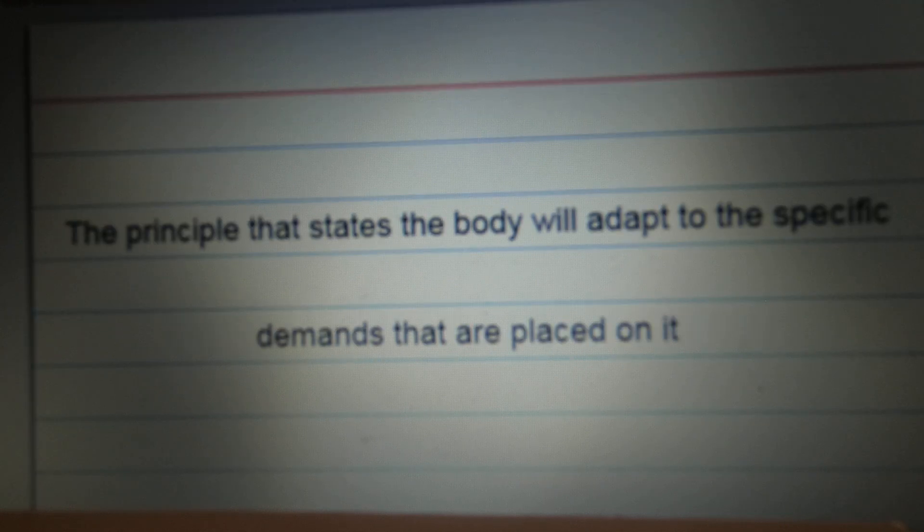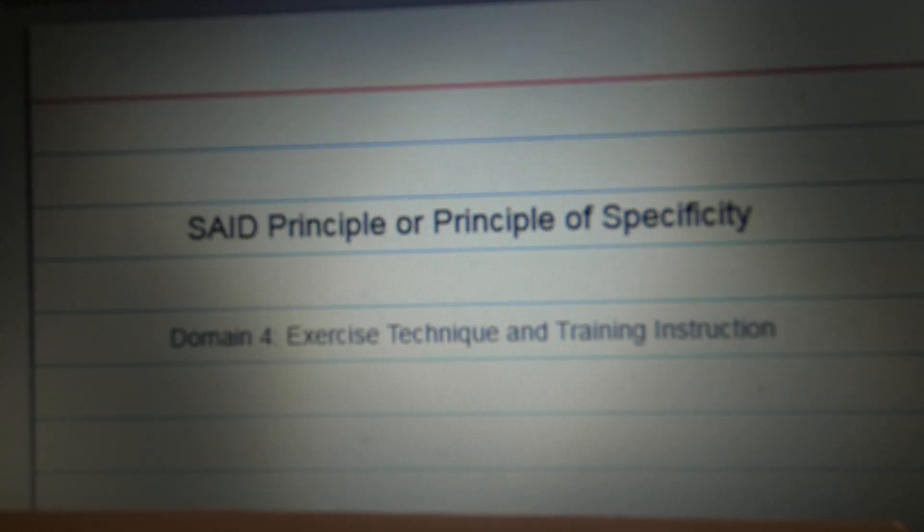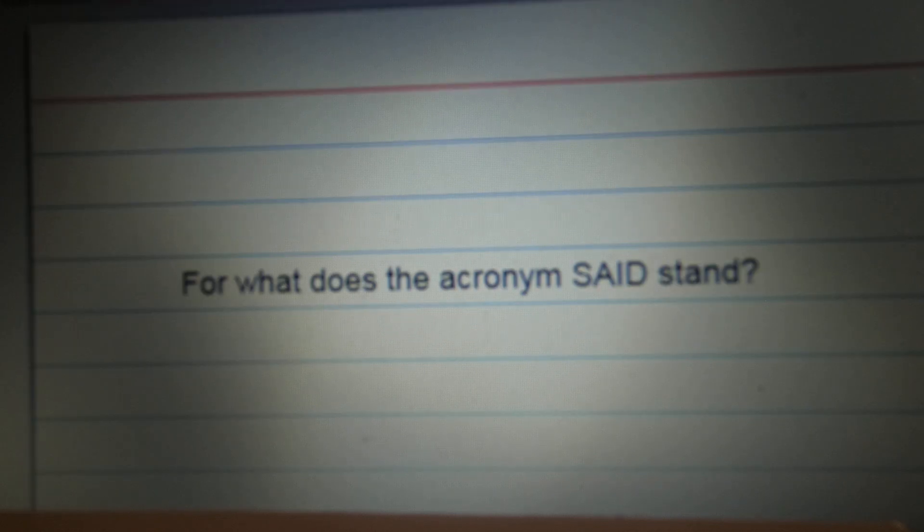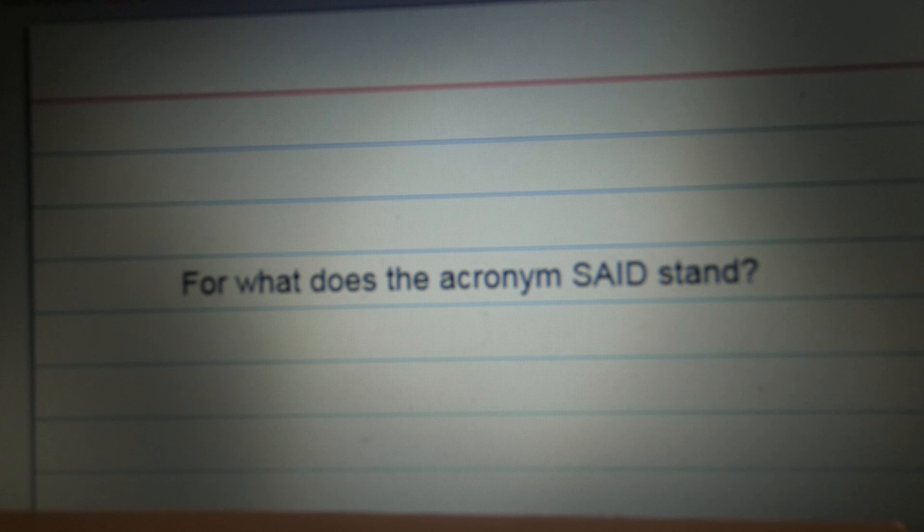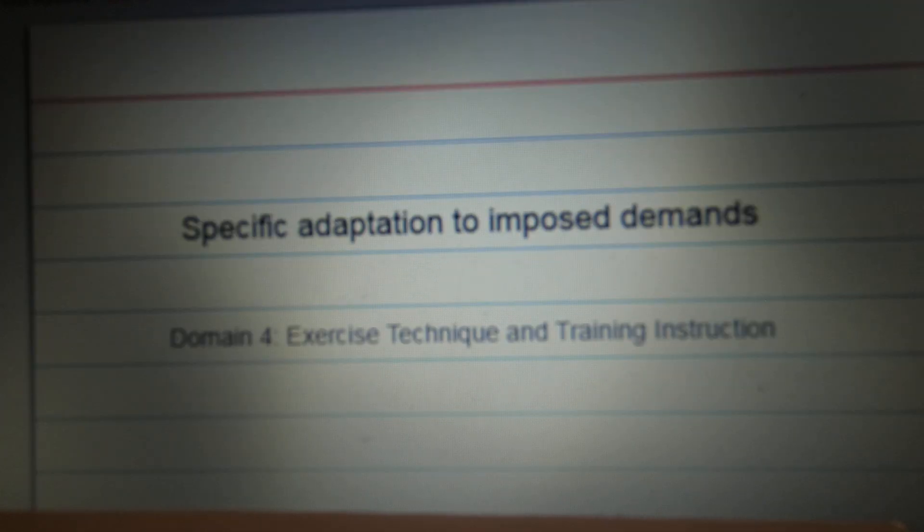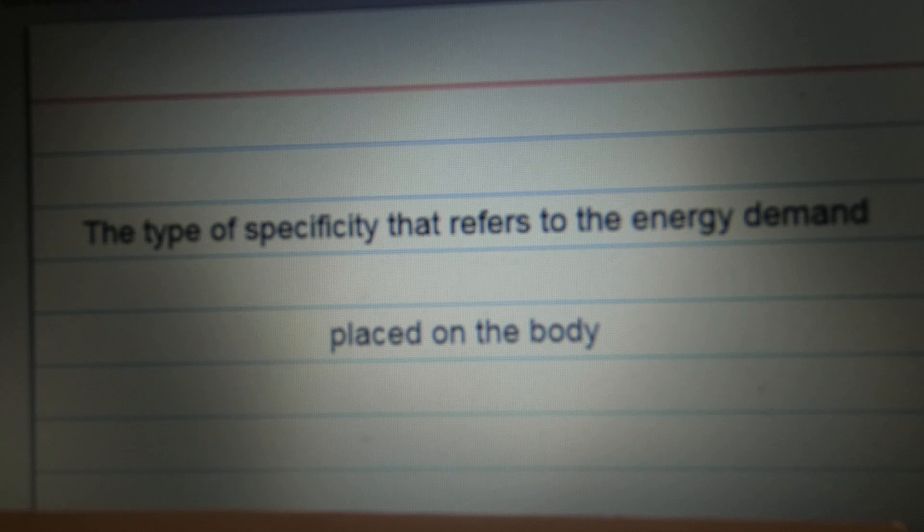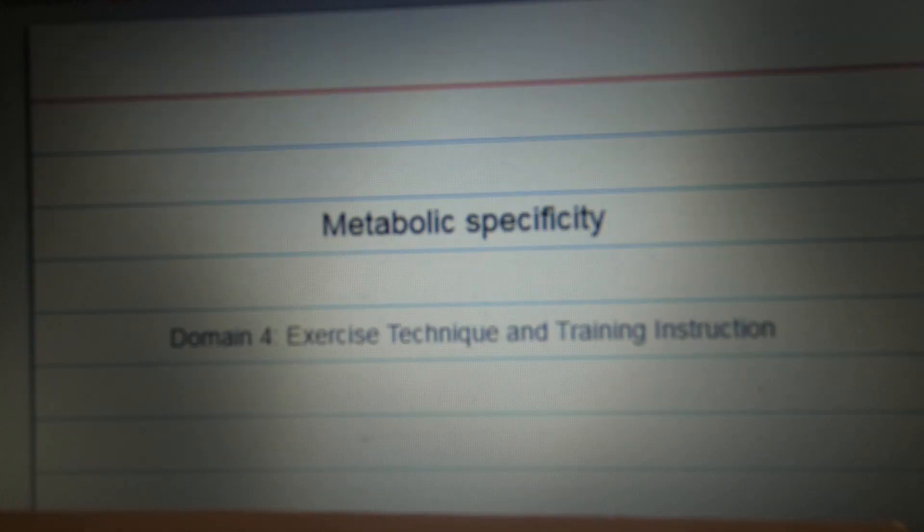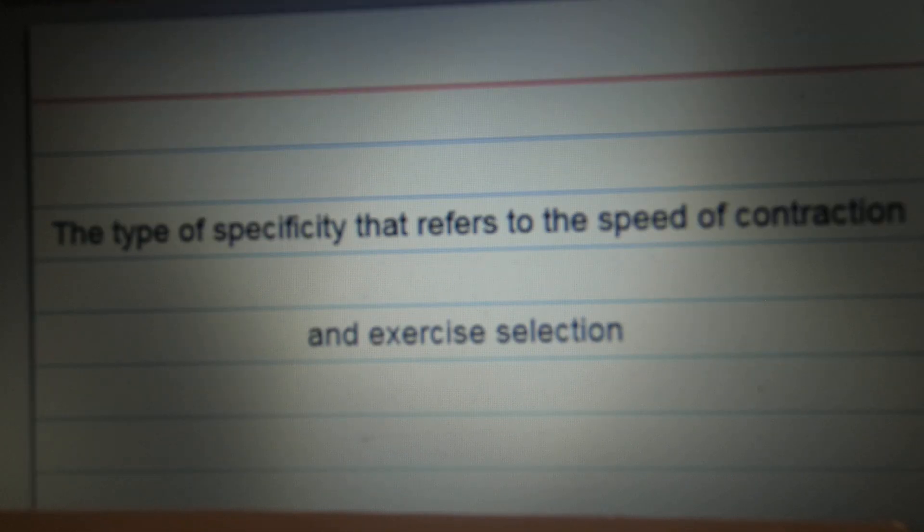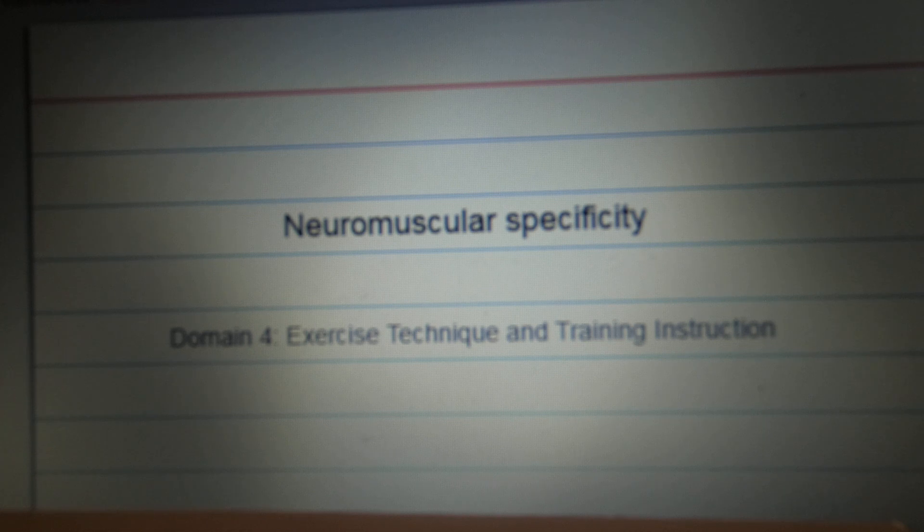The principle that states the body will adapt to the specific demands that are placed on it. SAID principle or principle of specificity. For what does the acronym SAID stand for? Specific adaptation to imposed demands. The type of specificity that refers to weight and movements placed on the body. Mechanical specificity. The type of specificity that refers to energy demand placed on the body. Metabolic specificity. The type of specificity that refers to the speed of contraction and exercise selection. Neuromuscular specificity.